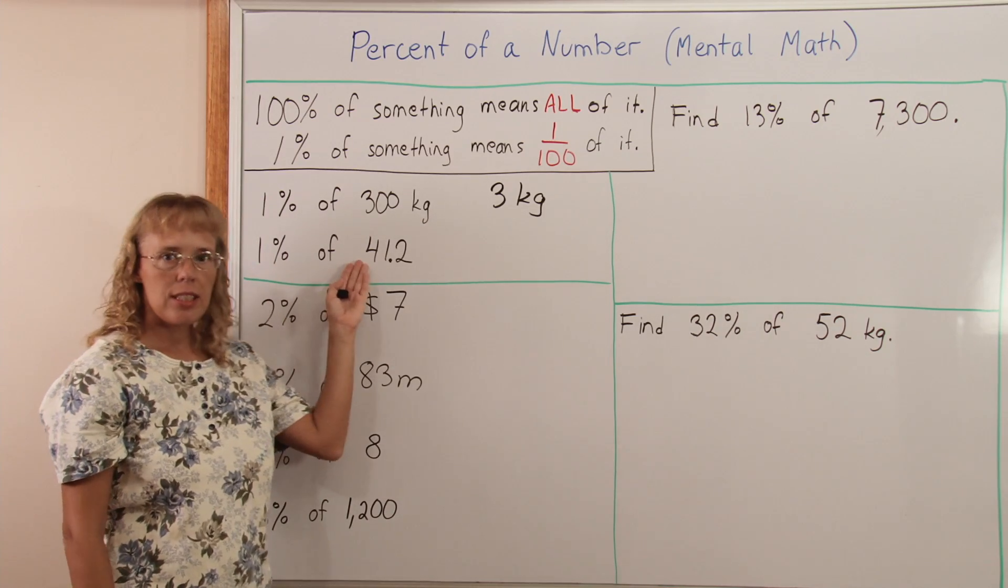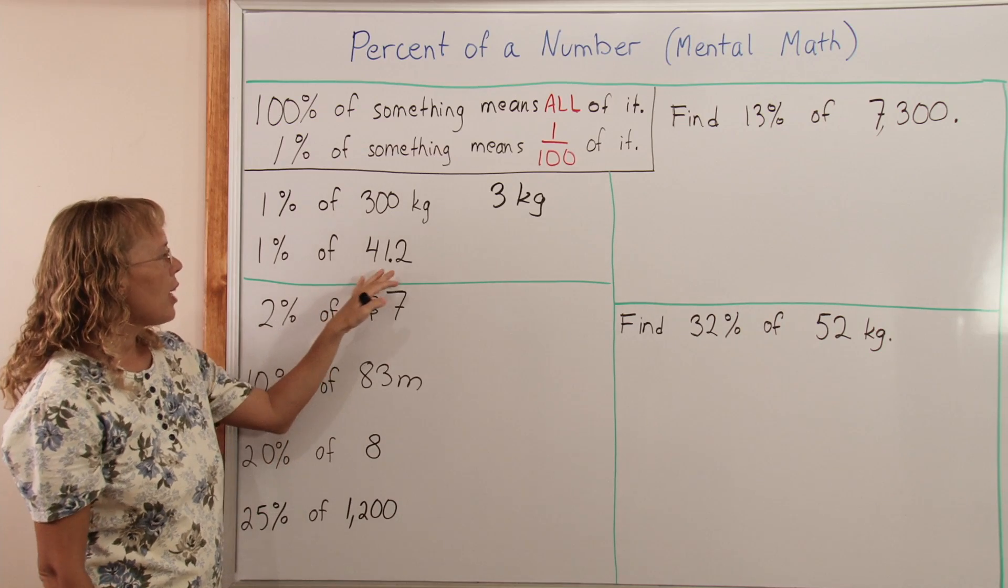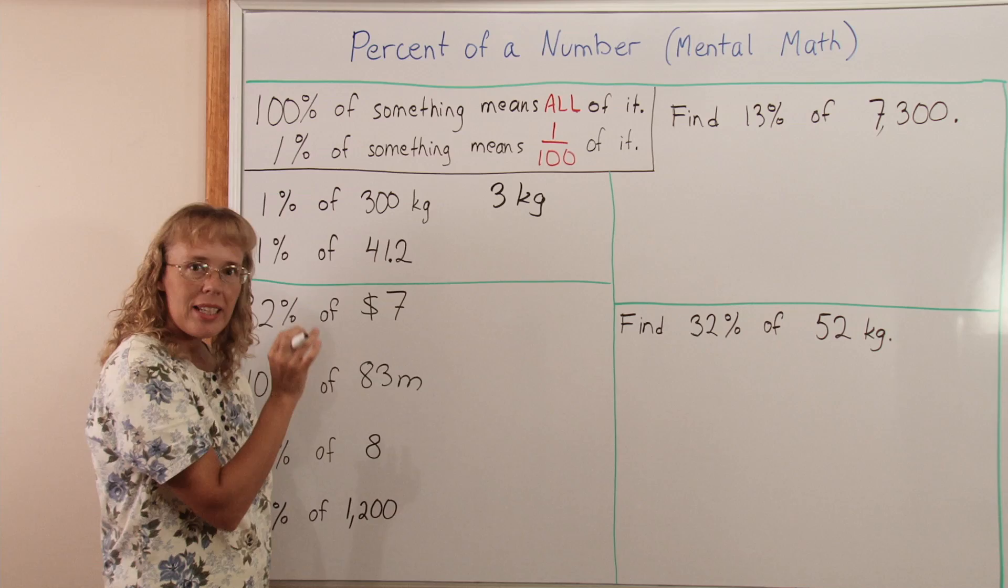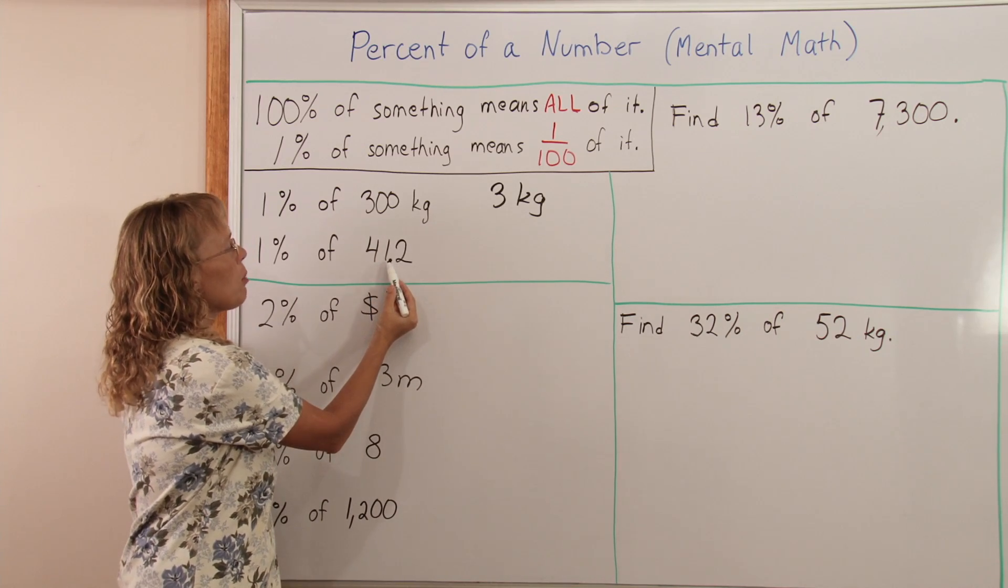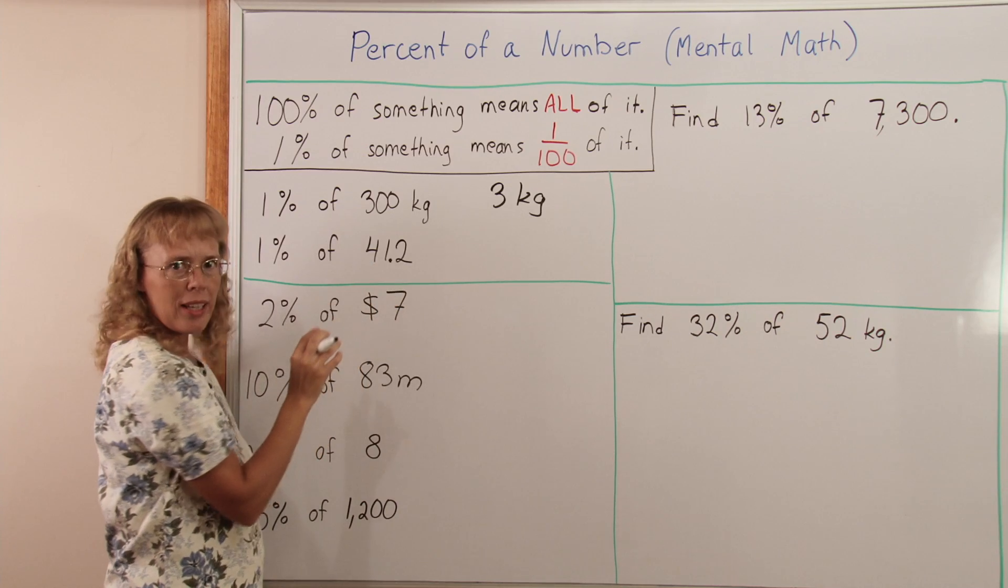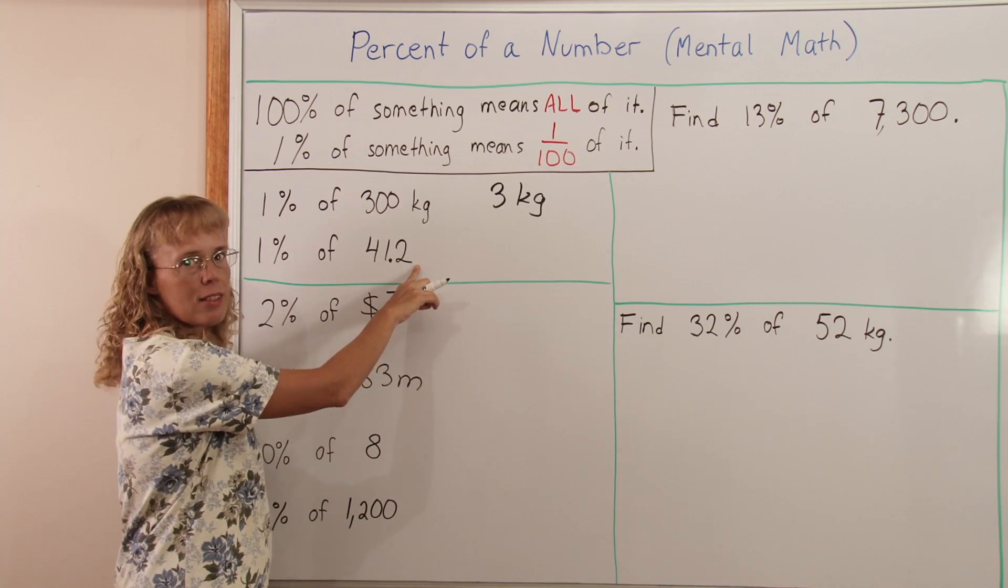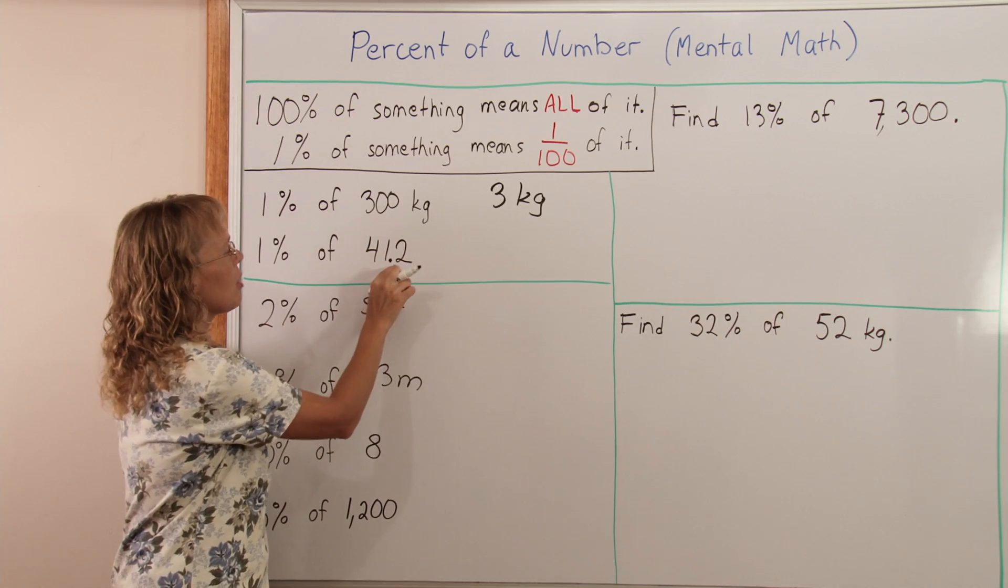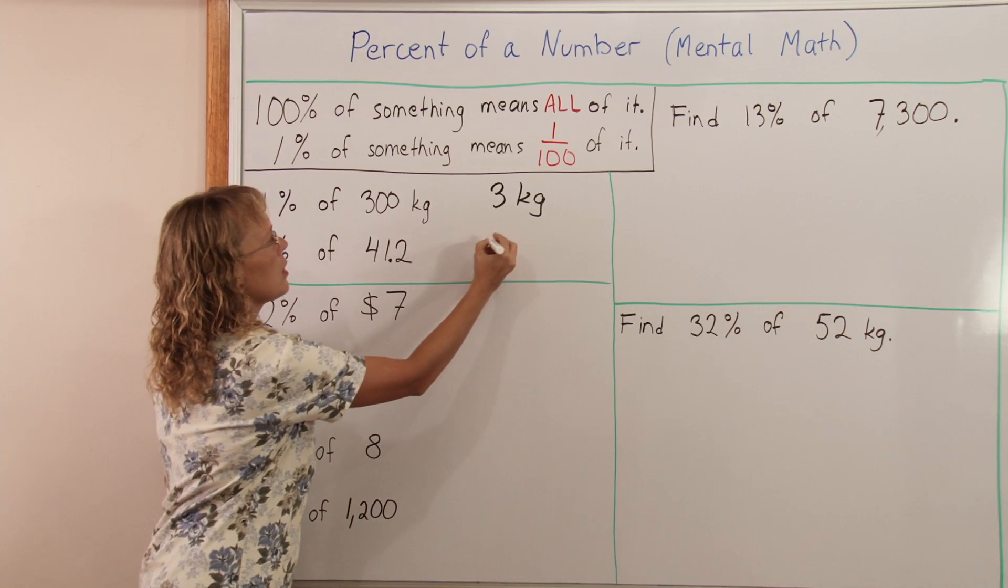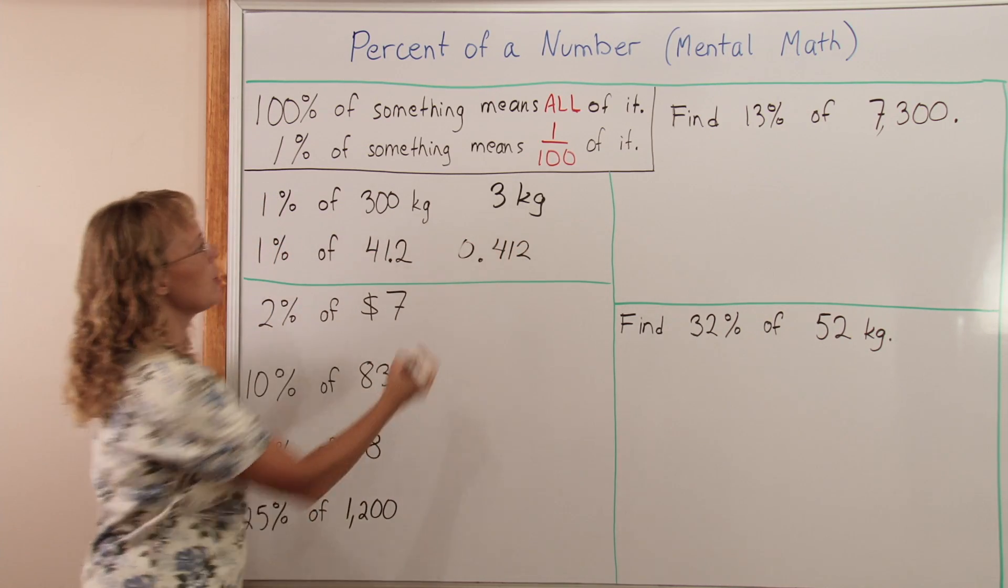If we find 1% of this number, 41.2, we need to divide it by 100. To do that, there's a trick: you move the decimal point two steps because we're dividing by 100. If I move it this way I would get 412, a bigger number. That's definitely the wrong way. So let's move it this way, two steps right in front of 4. So the answer is 0.412.